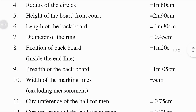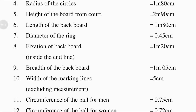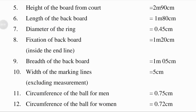Length of the backboard: length means a measure of distance. A backboard is a board used to support or an upright board behind the basket of which the ball may rebound. The length of the backboard is 1 meter and 80 centimeters. Diameter of the ring: a diameter is a straight line passing from side to side through the center of a circle; the diameter of the ring is 0.45 meters.